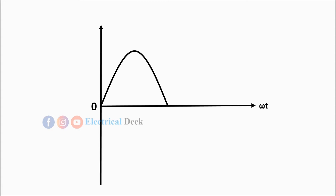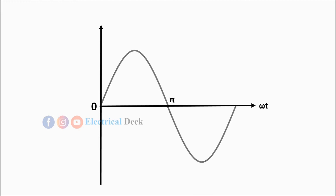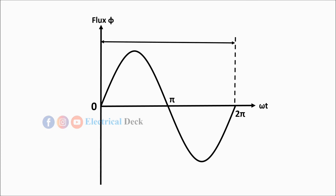Before deriving the equation for induced EMF, it is important to understand the waveform of an alternating supply. We use a sinusoidal wave for alternating supply. In a sinusoidal wave, it takes 180 degrees to complete one half of the cycle, represented as π, and 360 degrees to complete one full cycle, represented as 2π. The time taken to complete one cycle is equal to 1/f, the time for half a cycle is 1/2f, and the time for one quarter of the cycle is 1/4f.